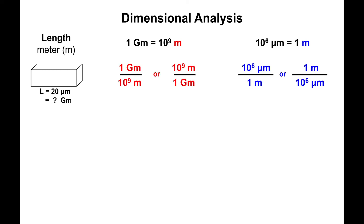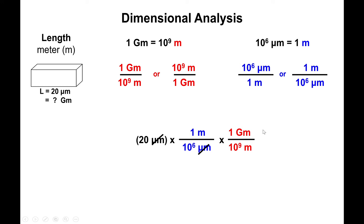We can write two fractions from each equality — gigameter on top or bottom with 10 to the 9 meters on the opposite end, or 10 to the 6 micrometers on top or bottom with the meter on the opposite end. Starting with 20 micrometers on top, we pick the fraction with micrometers on the bottom: multiply by 1 meter over 10 to the 6 micrometers. Micrometers cancel, leaving meters. Then, since meters are on top, we multiply by 1 gigameter over 10 to the 9 meters. Meters cancel and we're left with gigameters.